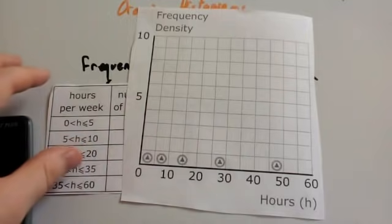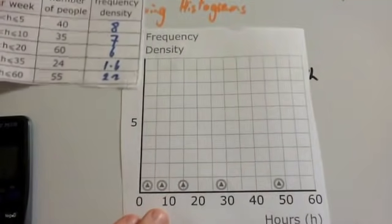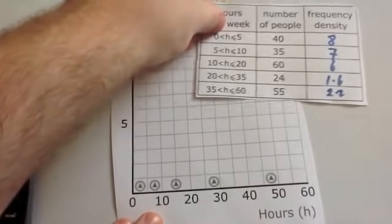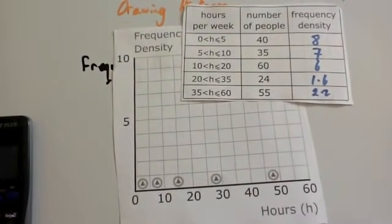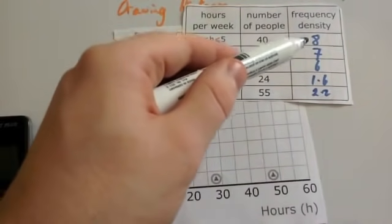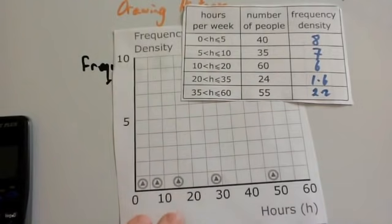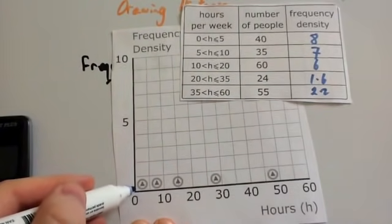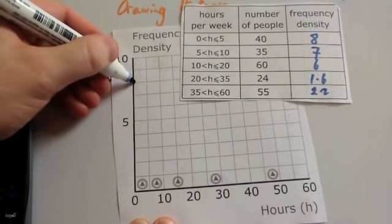So, let's now draw a histogram. To draw your histogram, you need to have your frequency densities available. So let's have a look at the first one. The first one, from 0 to 5, has a frequency density of 8. So 0 to 5 would be here on the x-axis, and it needs to go up to 8, up to here.